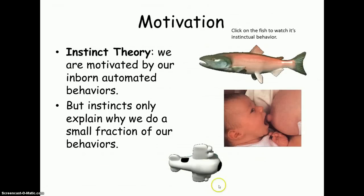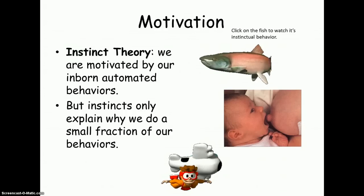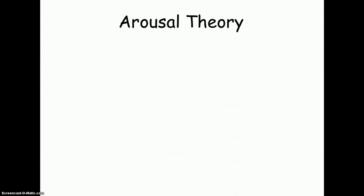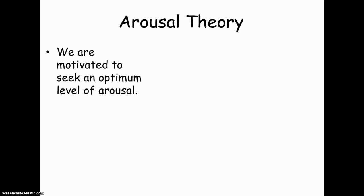What about people who do things like skydiving? What motivates them? What drives them to do this kind of thing? Neither of these theories really explains it. So next we have the arousal theory. This theory states that we are motivated to seek an optimal level of arousal. The question is what is the optimum level of arousal? Well, it depends on the individual. People with high optimum levels of arousal will be drawn to high excitement behaviors like bungee jumping, while the rest of us are generally satisfied with less exciting or less risky things.